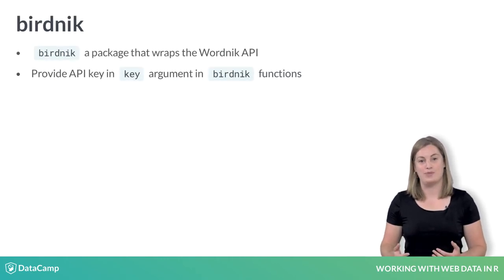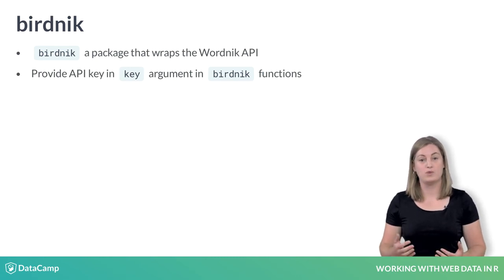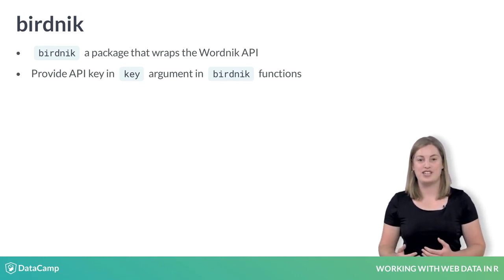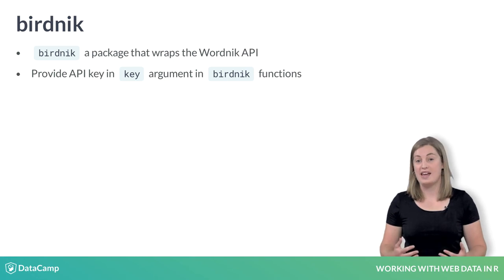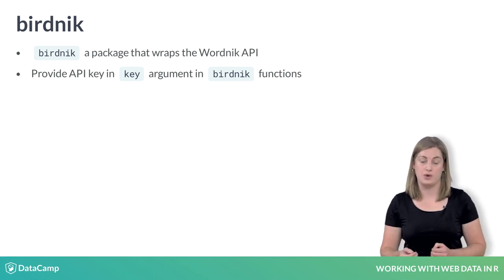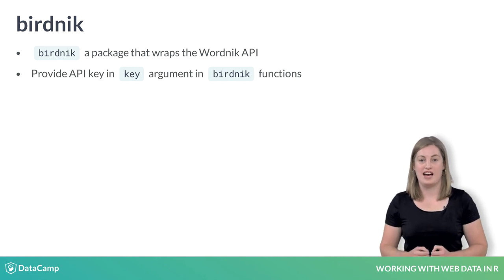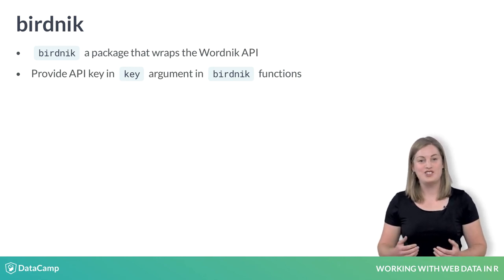Now you'll try an example using the BirdNIC package, which wraps the WordNIC API. This gives you information about English words, such as the frequency that a word is used. The API key is just a random string of letters and numbers that is unique to you. To use it, you just pass it in as an argument to the BirdNIC functions. Let's try an example.